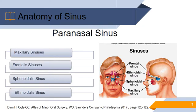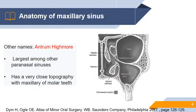The paranasal sinuses are a group of four pairs of air-filled spaces that surround the nasal cavity. The maxillary sinuses are located under the eyes, the frontal sinuses above the eyes, the ethmoidal sinuses between the eyes, and the sphenoid sinuses behind the eyes. The sinuses are named for the facial bone in which they are located. The maxillary sinus, also known as the Antrum of Highmore, is the largest of the paranasal sinuses.